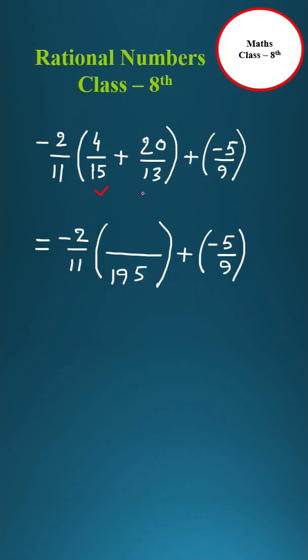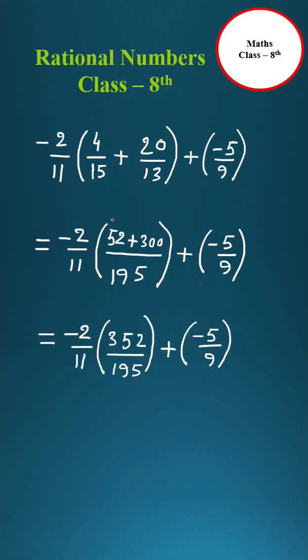Now LCM of 15 and 13 is 15 into 13 which is 195. Then 13 into 4, 52 plus 15 into 20, 352 plus 300, 352.